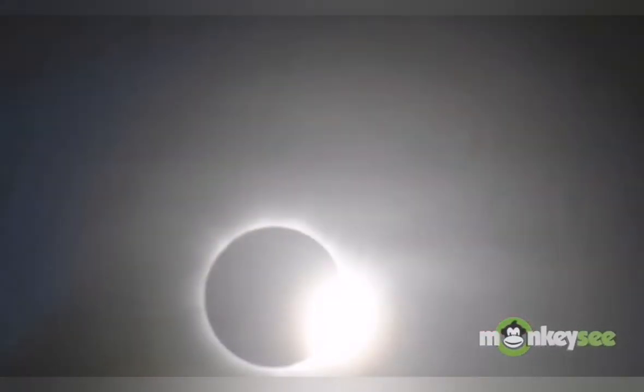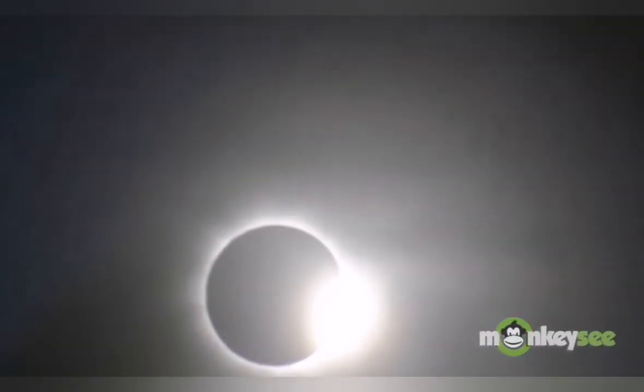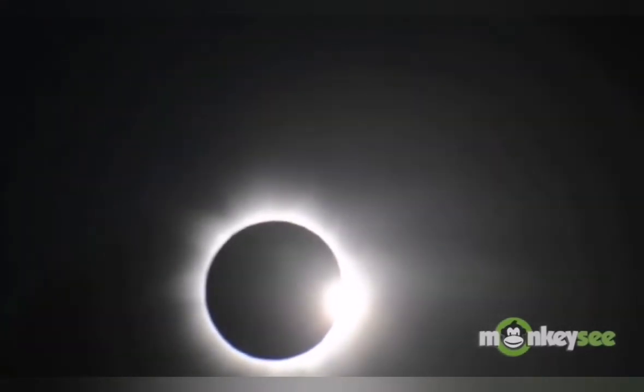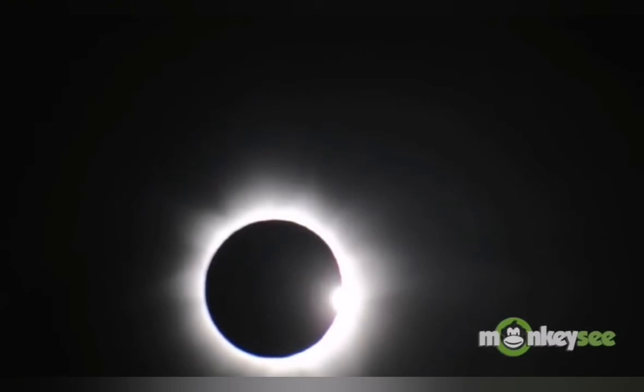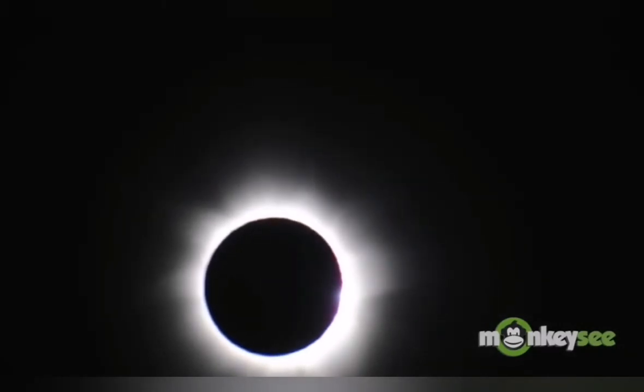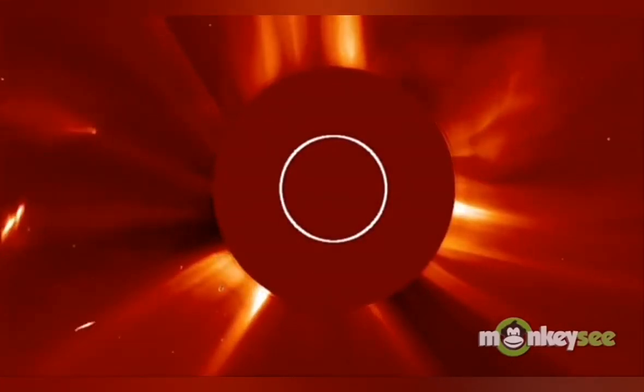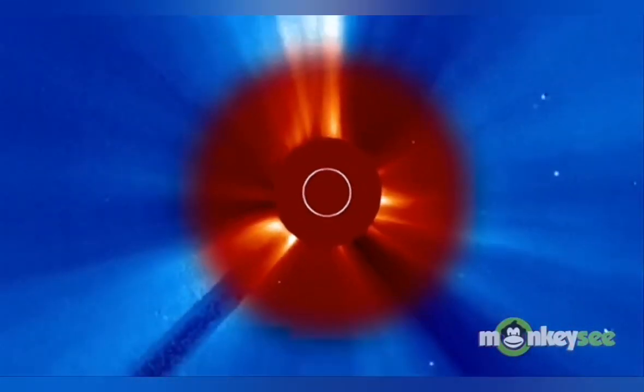Astronomers view solar eclipses with excitement. During a total solar eclipse, the Sun's corona is visible surrounding the moon's shadow. The corona is the outer atmosphere of the Sun, much cooler than the Sun. The corona is not normally visible to the eye. During an eclipse, it's also possible to see solar prominences, streams of solar material ejected from the Sun's surface.